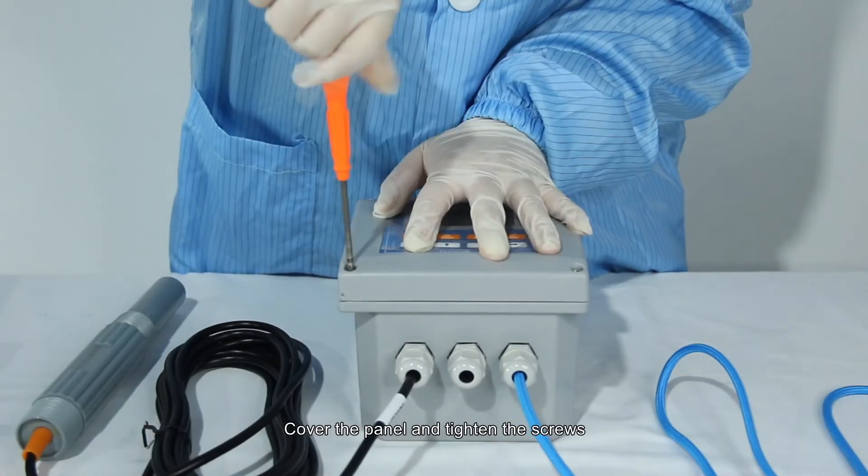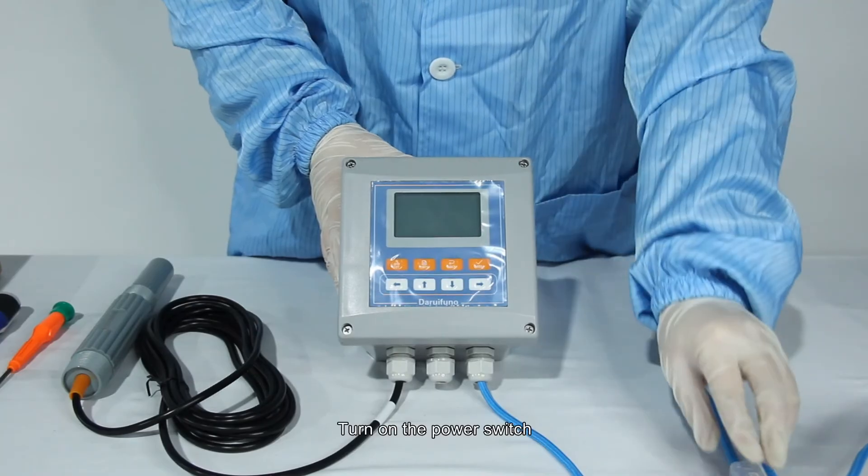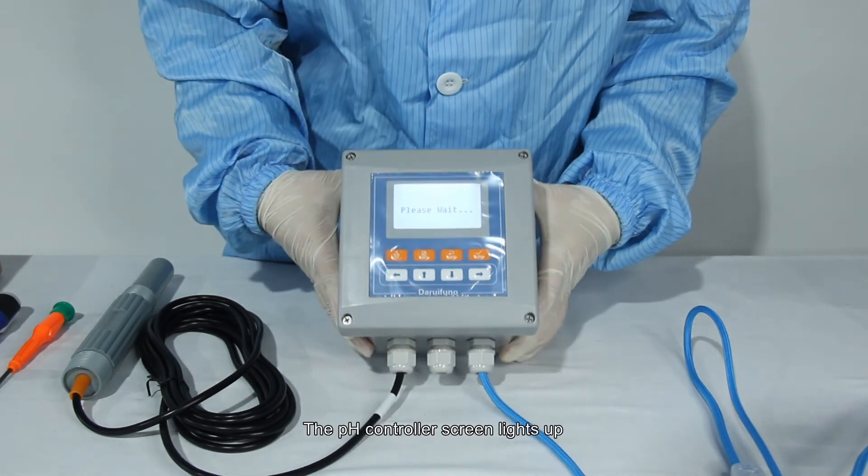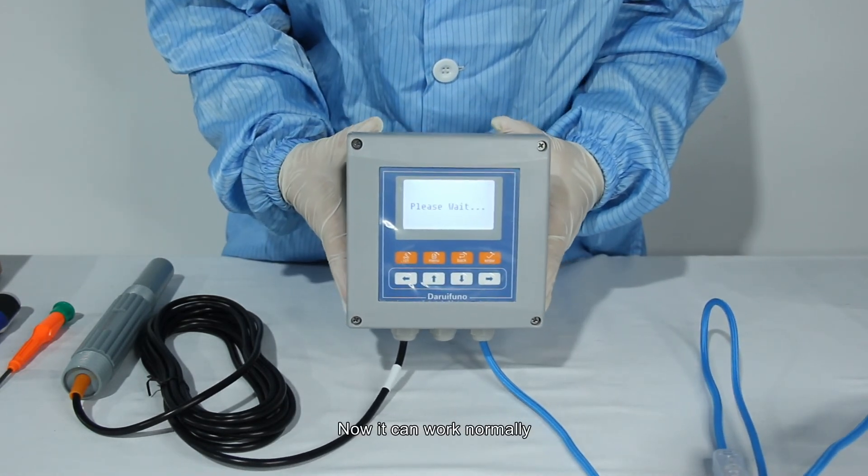Cover the panel and tighten the screws. Turn on the power switch. The pH controller screen lights up. Now it can work normally.